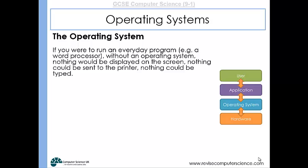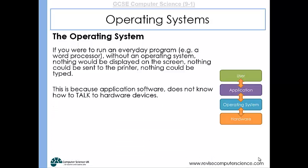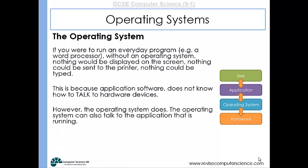If you consider running an everyday program without an operating system, nothing would be displayed on the screen. Nothing could be sent to the printer. If you were to play a game, nothing would be able to be controlled. The reason is that application software doesn't know how to talk to hardware devices. There are thousands of different types of hardware, and writing programs with the ability to talk to all of them wouldn't be very efficient. So the operating system takes responsibility to talk to all the different types of hardware.